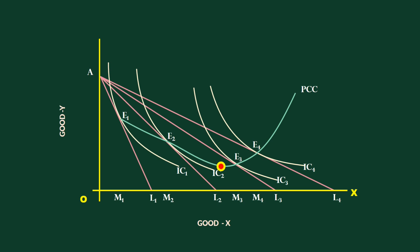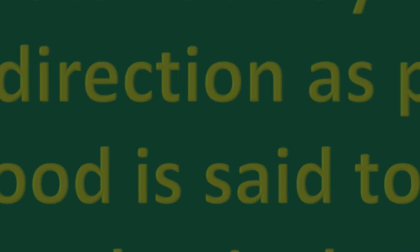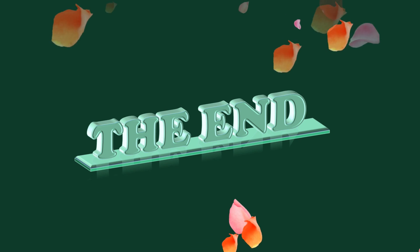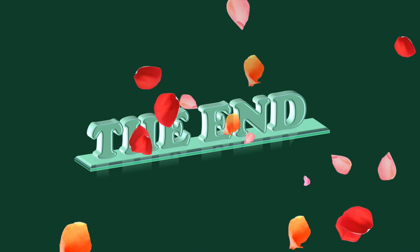Before we conclude, attempt and answer the true or false type question: If the total outlay moves in the same direction as the price moves, the good is said to have unitary elastic demand. If your answer is false, you are right. We shall discuss the derivation of demand curve from price consumption curve in the next lesson.